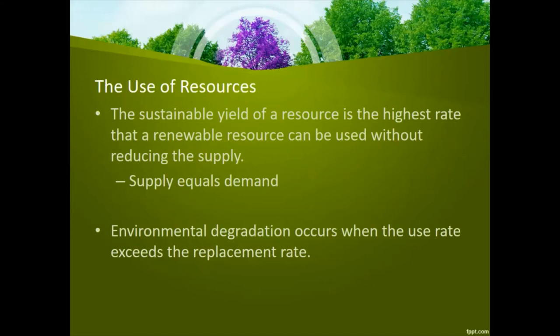If we keep in mind the sustainable model we've been talking about, the use of resources is best when it's mostly sustainable. We can't go over the level at which renewable resources can be replenished, because if we go beyond that, supply will not match demand. As we get more and more people with a bigger population consuming more things, we start taxing renewable resources in a way that they cannot regenerate fast enough to provide for all the demand. This is where we get environmental degradation — this occurs when the use rate exceeds the replacement rate.